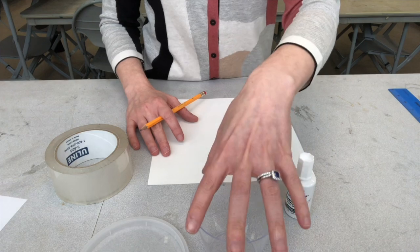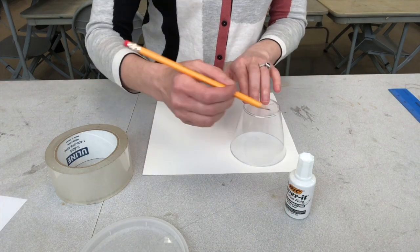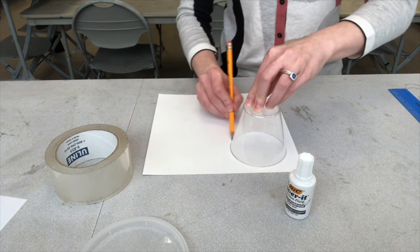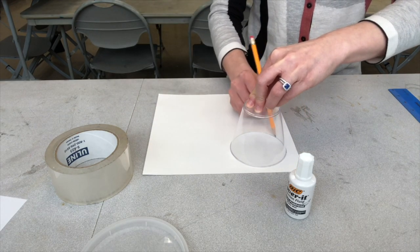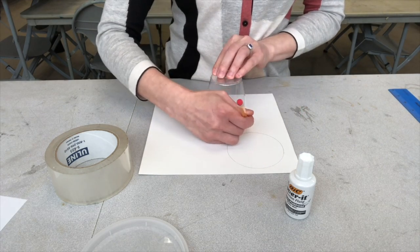So what I'm going to do is I'm going to start by taking my cup. I'm going to put the large side of the circle down. And with a pencil, I'm going to trace the outline of the circle. Then I'm just going to move the cup around and trace a few more circles.